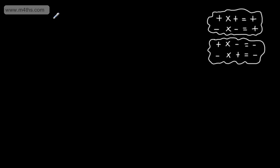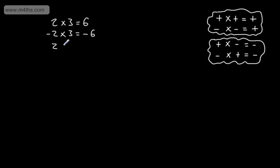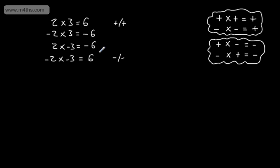Let's do a few examples. 2 multiplied by 3 gives us 6 — both positive. Negative 2 multiplied by 3: one positive, one negative, so the answer is negative 6. 2 multiplied by negative 3 also gives negative 6. Yet negative 2 multiplied by negative 3 gives positive 6. We can see the signs are the same — both negative — and they give us a positive number.